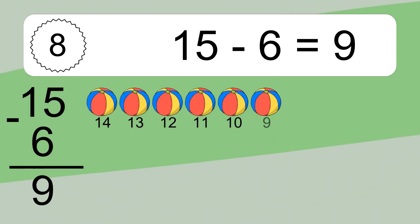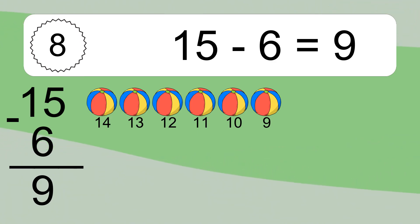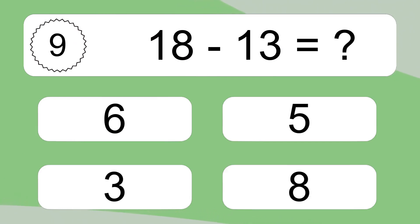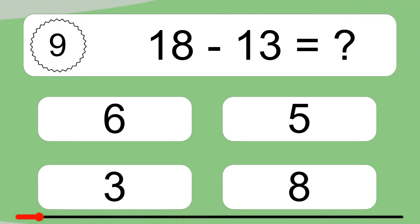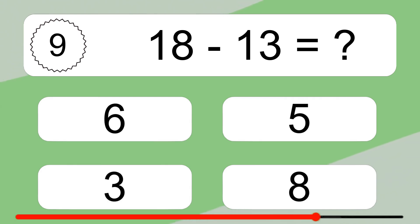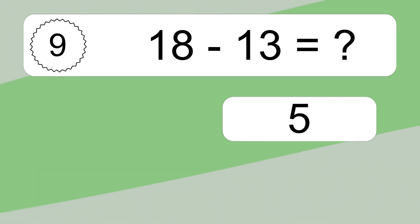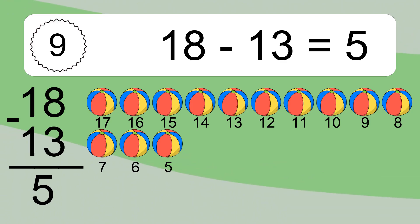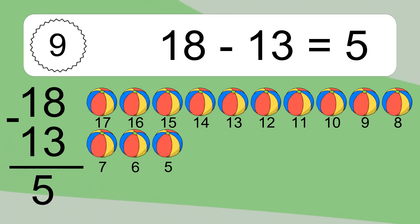15 minus 6 equals 9. Let's count it: 14, 13, 12, 11, 10, 9. 18 minus 13 equals what? 18 minus 13 equals 5. Let's count it: 17, 16, 15, 14, 13, 12, 11, 10, 9, 8, 7, 6, 5.